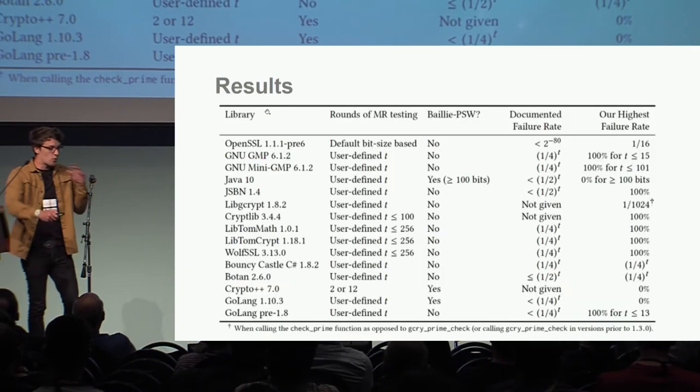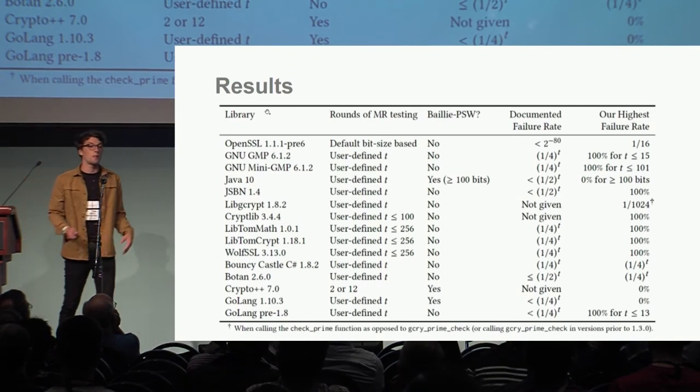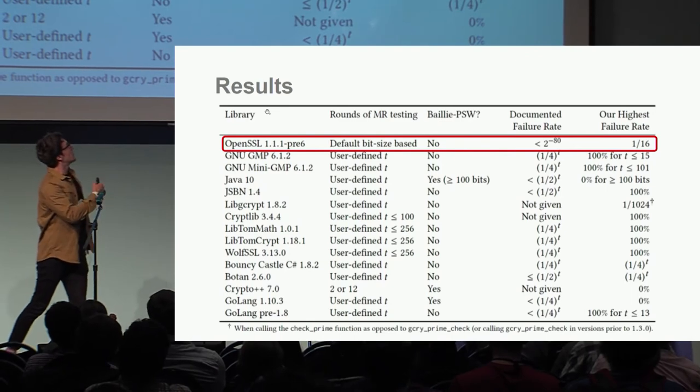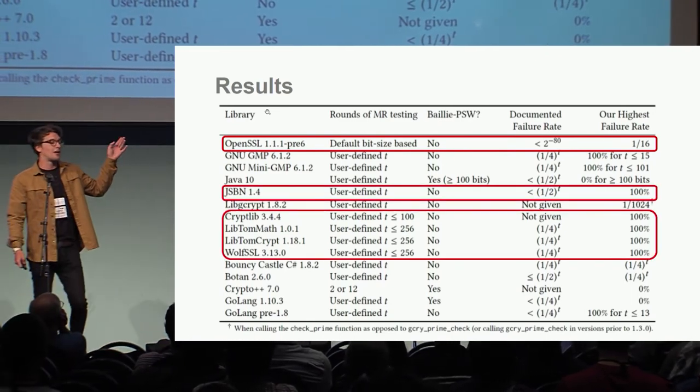A quick overview of what we did. We documented the failure rate that these probabilistic tests claim to have, and we compiled these into a table. We also compiled the highest rate of failure that we could get ourselves.